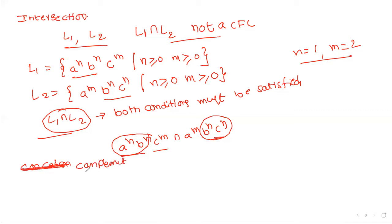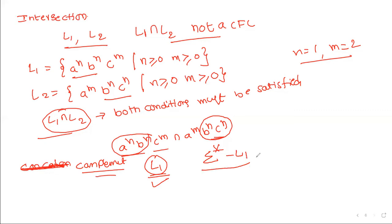The next property is complement. Suppose L1 is a context-free language. The complement is sigma* minus L1 — meaning the languages that are not in L1. These are not context-free languages; context-free languages are not closed under complement.